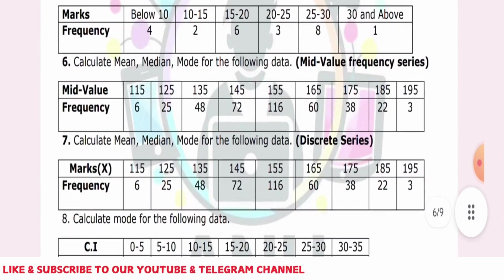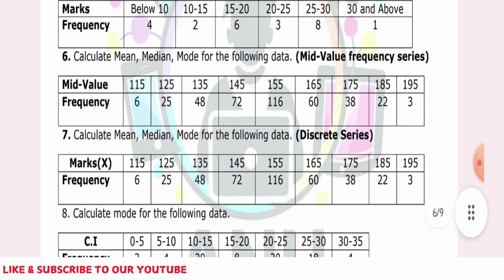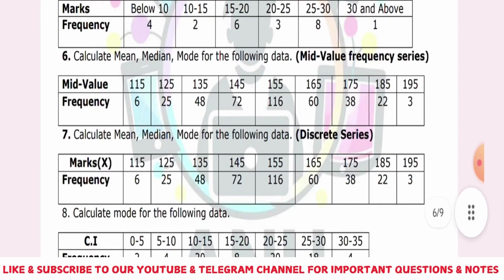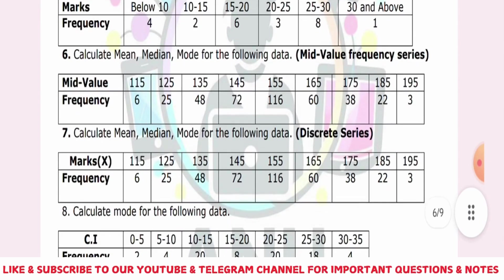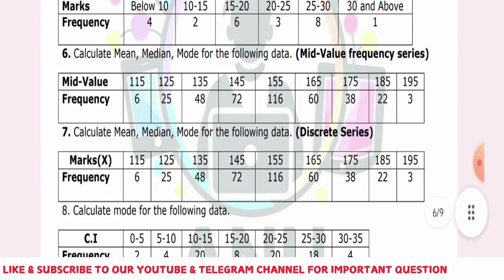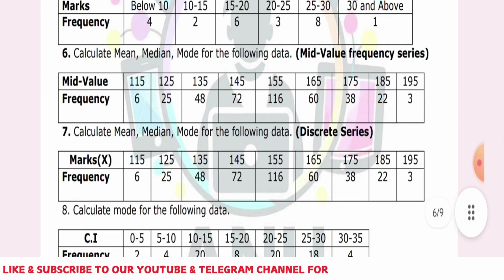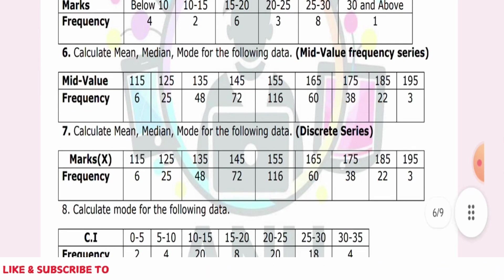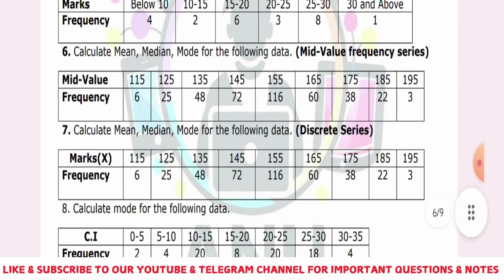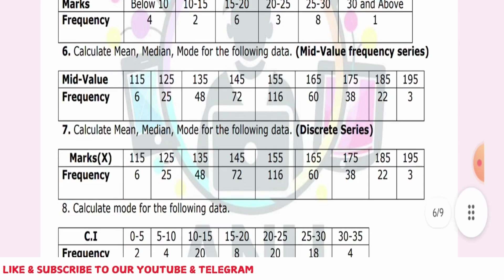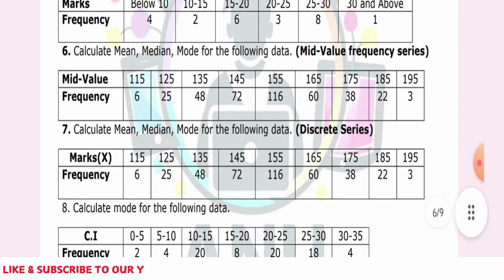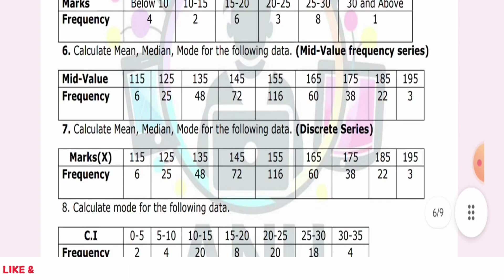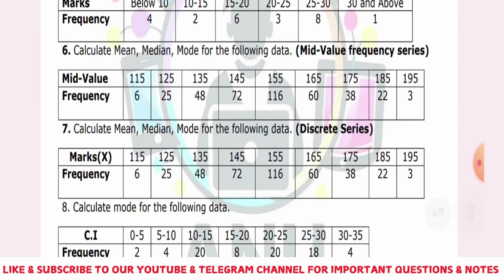Next is the mode for the following — this is the formula: L plus N, F1 minus F0 by 2F1 minus F0 minus F1. But in this case, the mode is the highest frequency — it will be repeated in question number 8. The mode is ill-defined — the mode is equal to three times median minus two times mean.